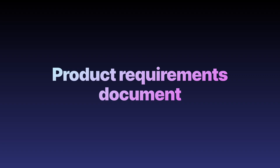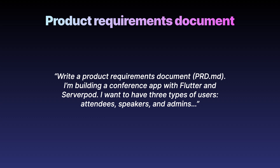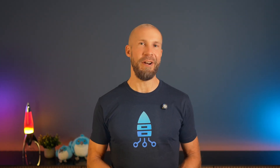Let's start with the product requirements document. This is where you collect all the overarching information about your project. I typically use the agent to help write this as well. For example, to build an app for managing the Fullstack Flutter conference, I wrote: 'Write the product requirements document, a PRD.md. I'm building a conference app with Flutter and ServerPod. I want to have three types of users — attendees, speakers, and admins.' Then I obviously added all the other details about the app and the features I wanted. The agent will output a draft PRD, but you need to make sure it includes the right things. So what do you need in your PRD? A description of your app and features, as detailed as possible.